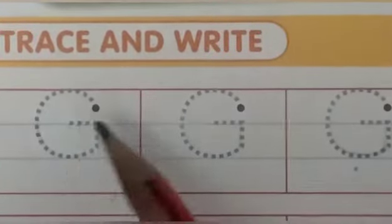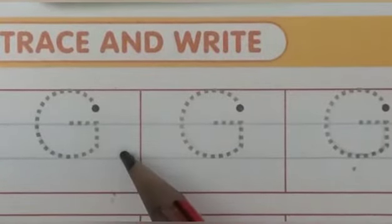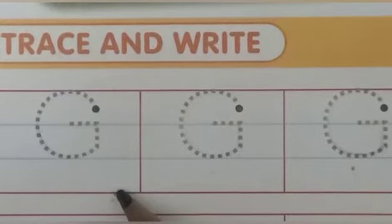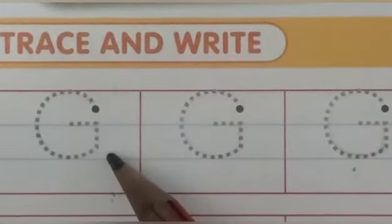Now, I will teach you how to write letter G. As we know, we have four lines in our English notebook. We write in upper three lines.